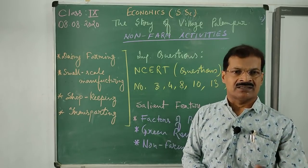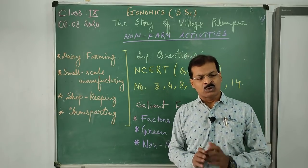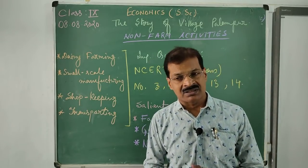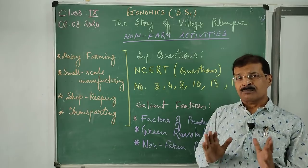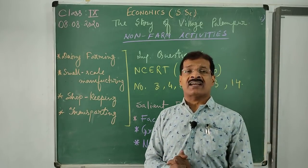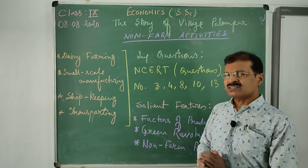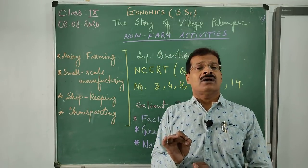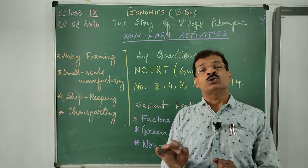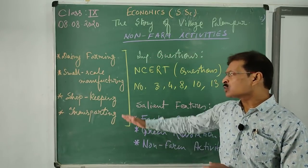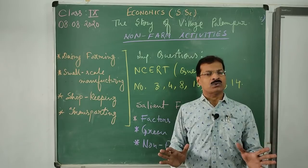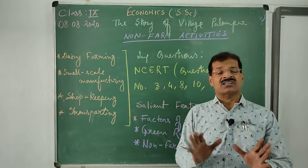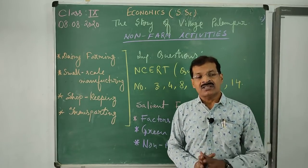Second is small-scale manufacturing. In Palampur, small-scale manufacturing units are very limited and are mostly family activities, so we cannot consider it a very big manufacturing activity. However, small-scale activities at least provide a livelihood option to a few. Third is shopkeeping - in Village Palampur and remote villages in India, we often see shops selling mostly necessities and essential commodities.